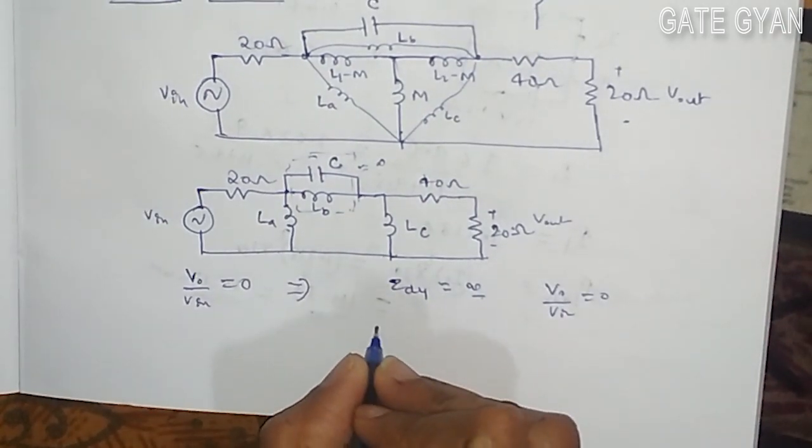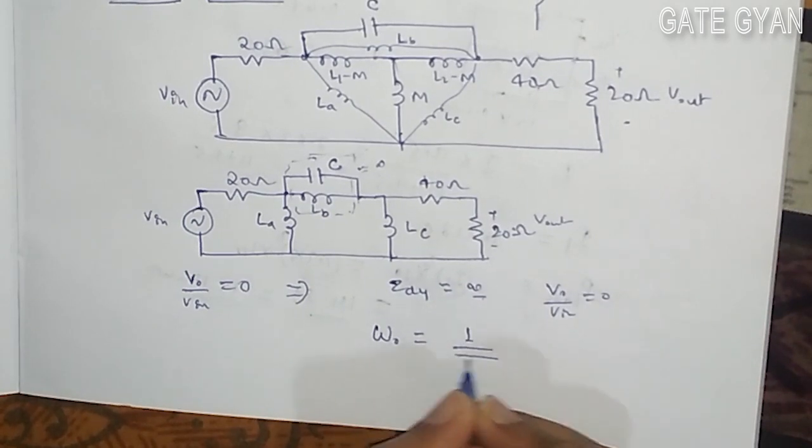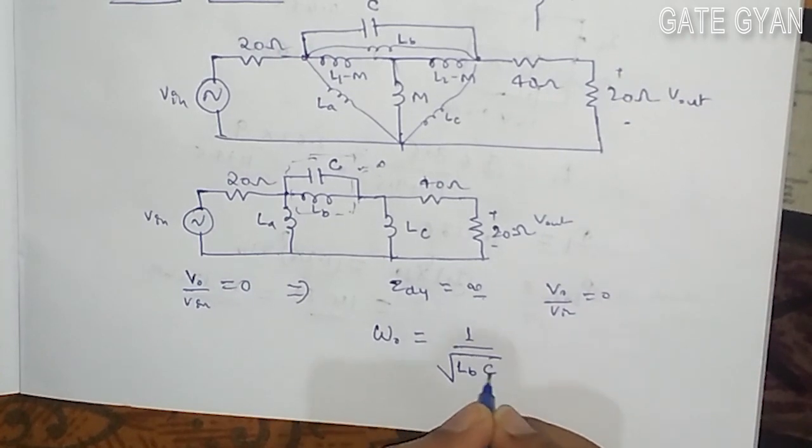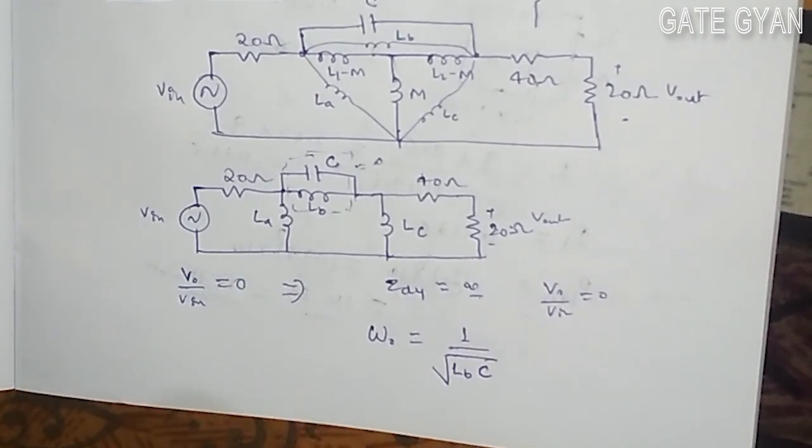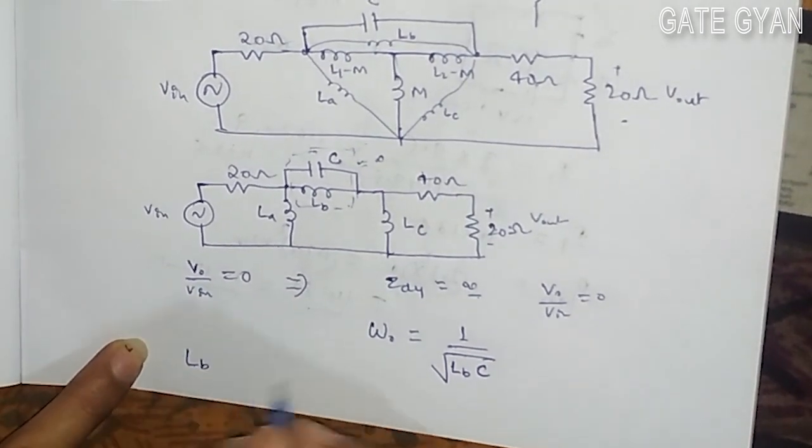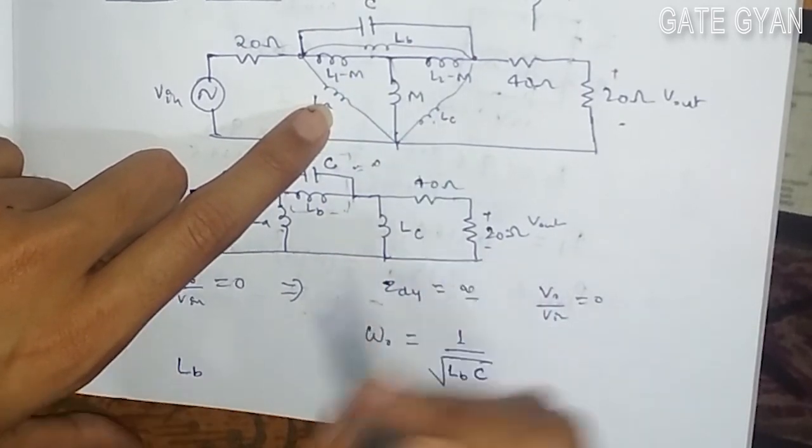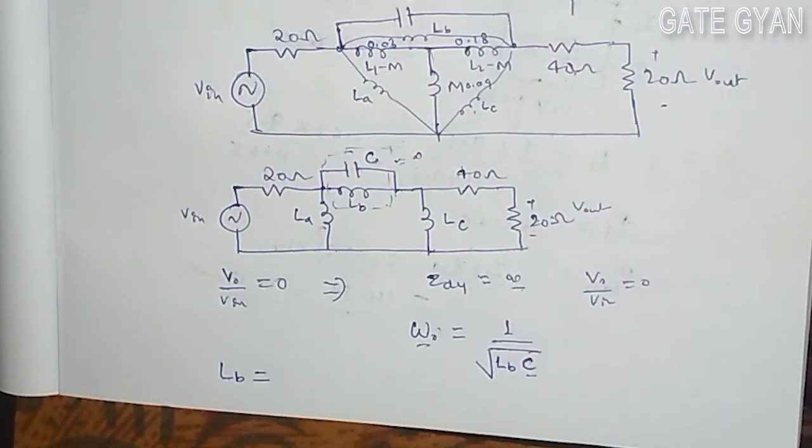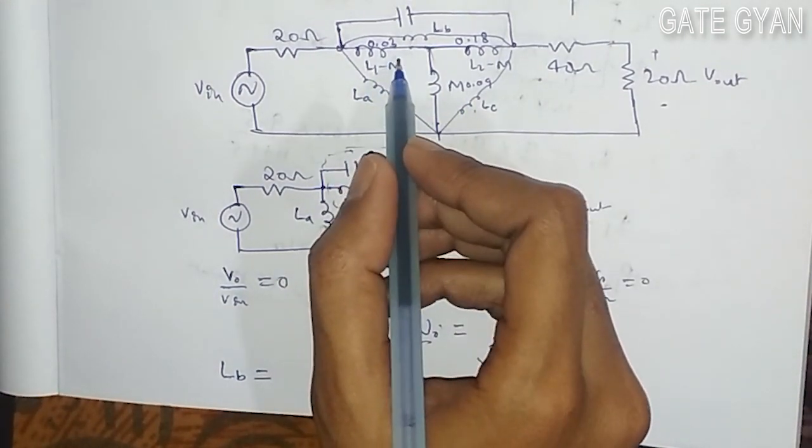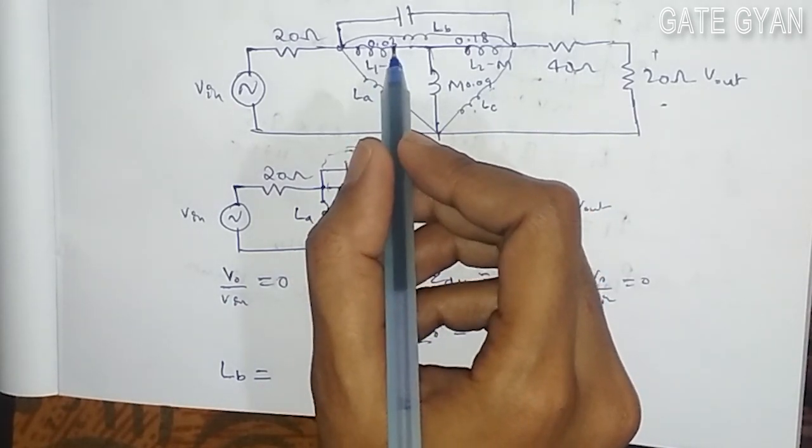So this circuit is going to be a resonant circuit with value of LB and C. So here I have to find that omega 0 is equal to 1 upon square root value of the inductance LB into C. So for this first of all I will have to find the value of this LB. In this network, first I will find the value of L1 minus M. M is 0.09 and L1 is 0.12, so it is going to be 0.03.